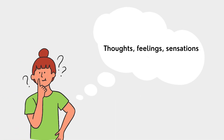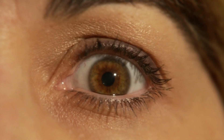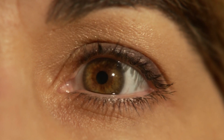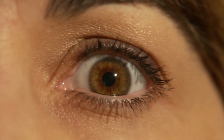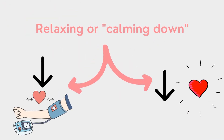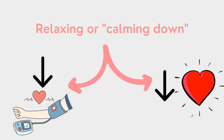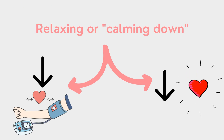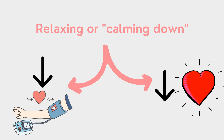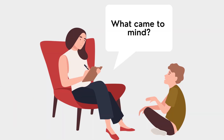Following this initial phase, patients hold the image, their thoughts, feelings, and physical sensations in mind, and move their eyes back and forth by following the therapist's hand. These sets of alternating stimulation last from 20 seconds to several minutes, depending on the patient's emotional reaction. The patient's emotional reaction is associated and correlated with physiological signs of relaxation, such as reduction of blood pressure and heart rate. After each pause, the patient reports on what came to mind.